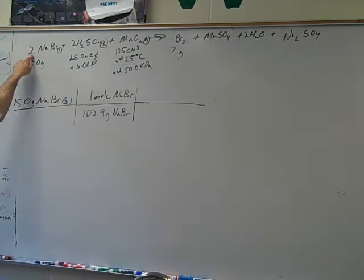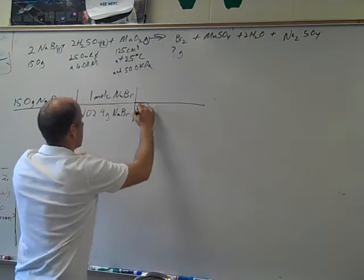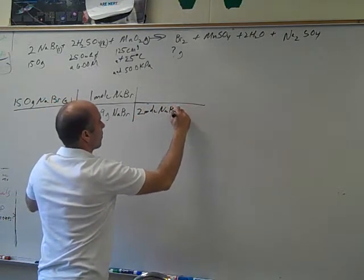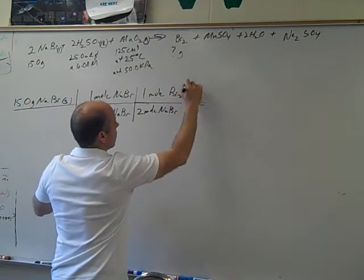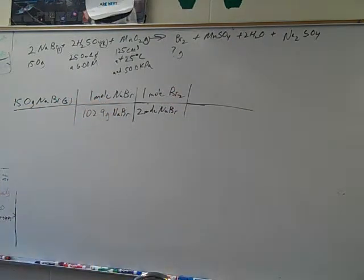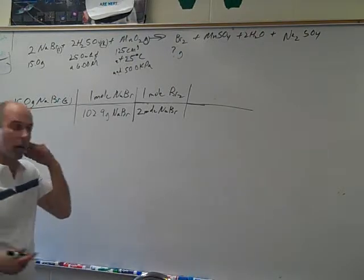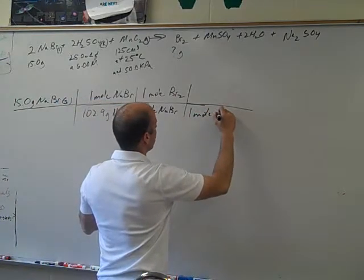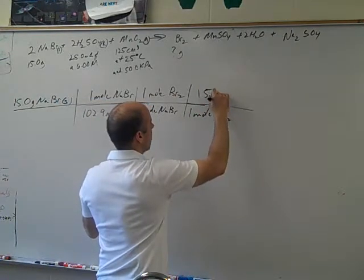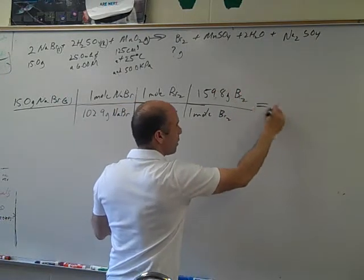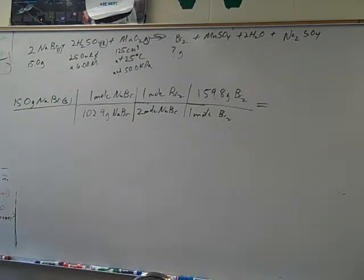Then we go from, for every two of these, I get one of those. So now I've got it in moles of my unknown, and then I convert my unknown to grams. One mole of bromine weighs 159.8 grams. Because bromine weighs 79.9, there's two of them. My calculation. This is sort of review? This is review.